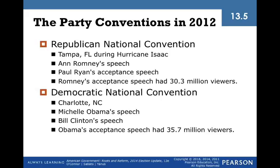The Republican National Convention got off to a windy start as Hurricane Isaac blew through Tampa, Florida. After the brief weather delay, Ann Romney gave a speech calculated to make her husband appeal to women voters. Paul Ryan's acceptance speech was criticized for numerous factual errors. The convention concluded with Romney's acceptance speech, viewed by an estimated 30.3 million people. The Democratic National Convention was held in Charlotte, North Carolina. A minor controversy erupted about the absence of God from the party platform. The program began with a speech from First Lady Michelle Obama. Bill Clinton gave a well-received speech formally nominating President Obama for re-election, but the acceptance speech had to be moved indoors due to rain, reducing the live audience from 72,000 to about 20,000.